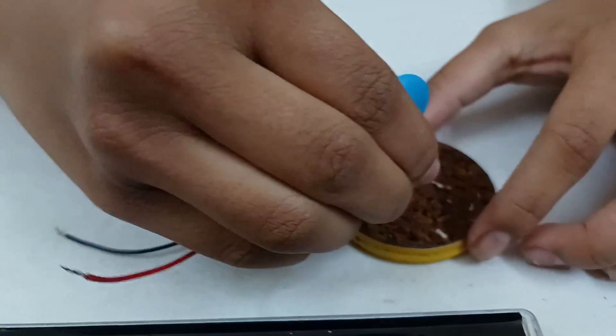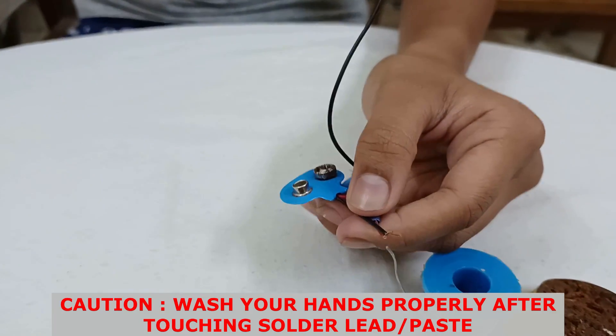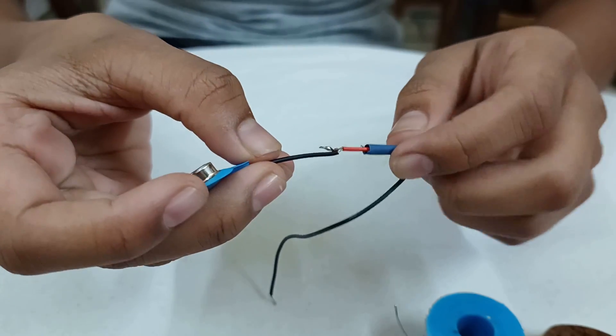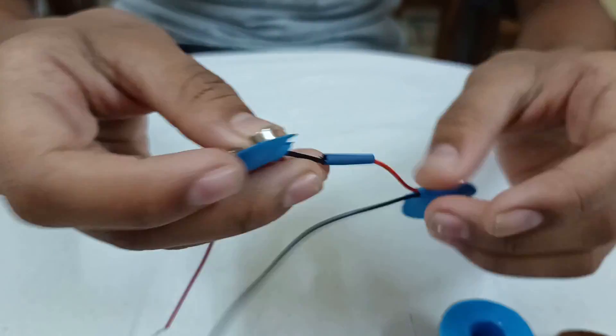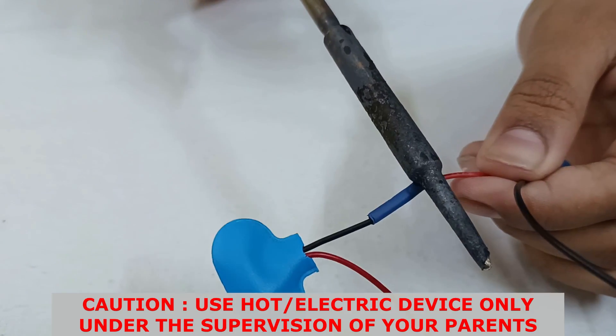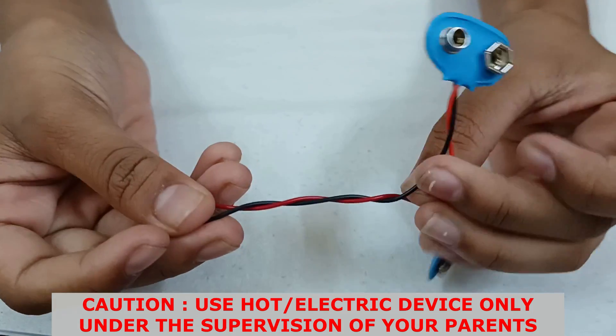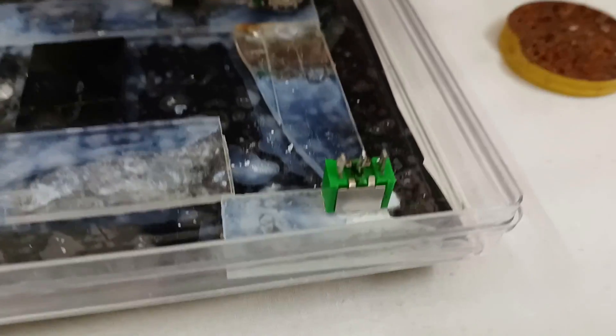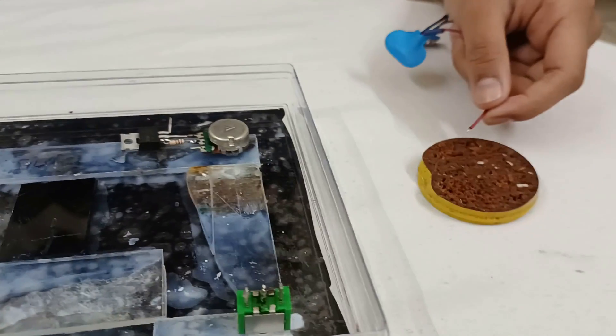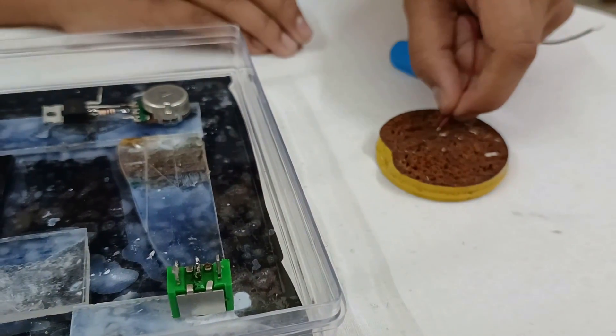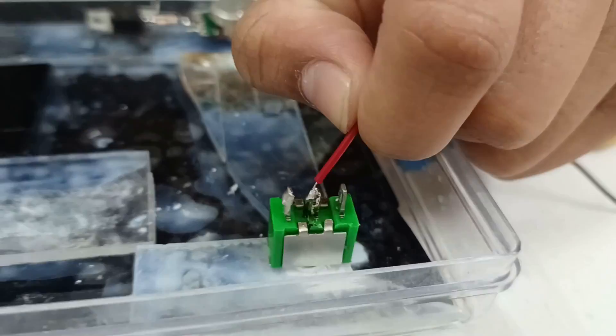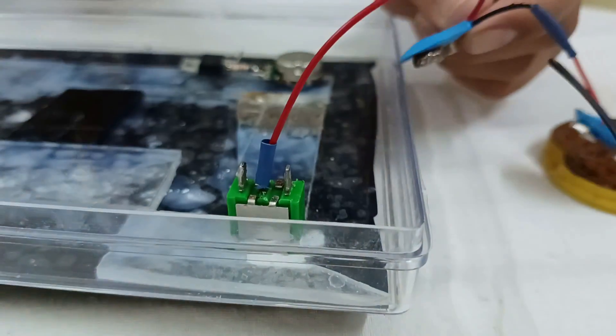Now dip it in the paste and solder it properly. Now insulate it. Now heat it. Now put the insulation in place, like this.